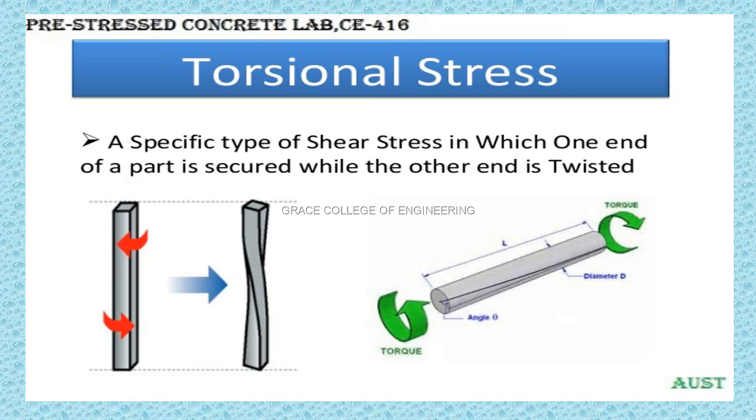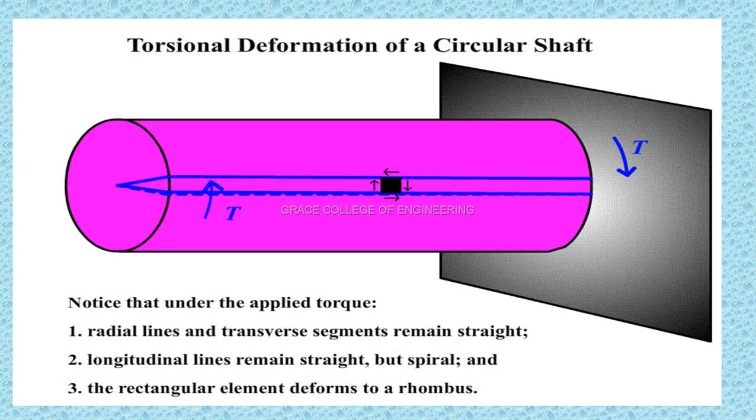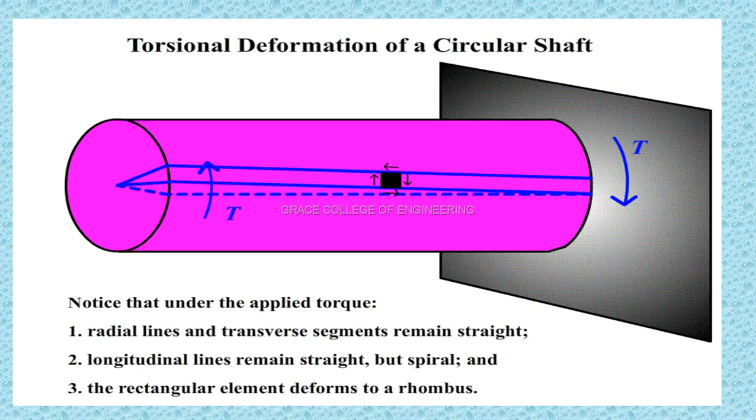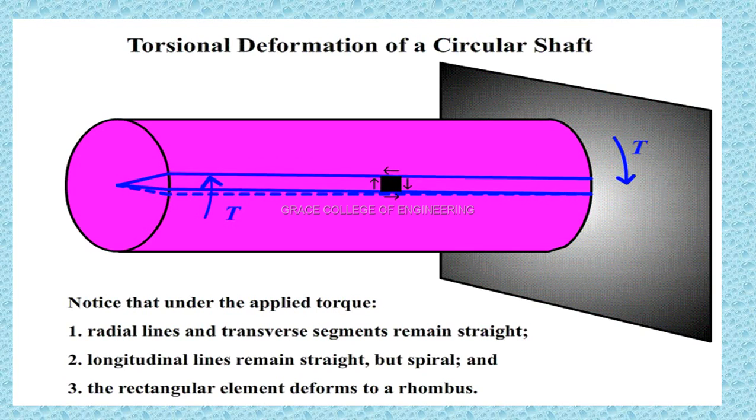The next one, torsional stress. Now if we rotate, there will be a change in angle. Sometimes when one end is fixed and the other end is twisted, we call it as torsional stress. The next one is torsional deformation. The torsional deformation is the angle variation when radial lines and transverse segments remain straight.